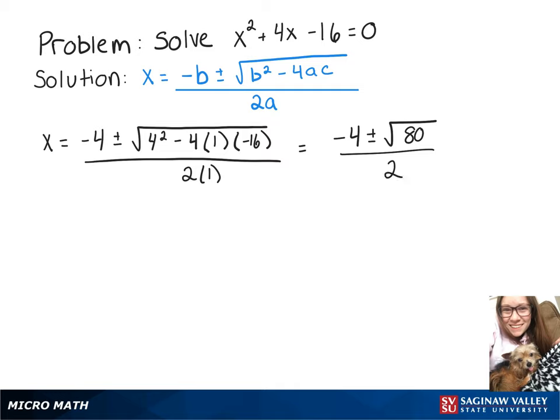Then we want to simplify that square root of 80, so we would be left with negative 4 plus or minus. We can think about that as the square root of 16 times 5, so we can turn it into 4 root 5 over 2.